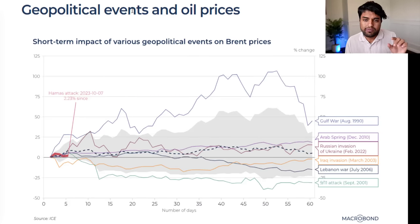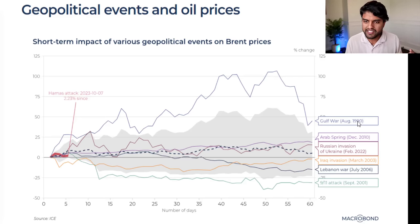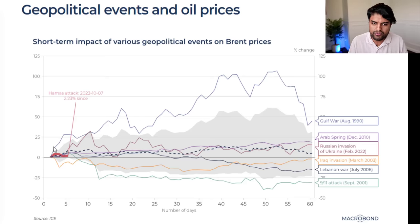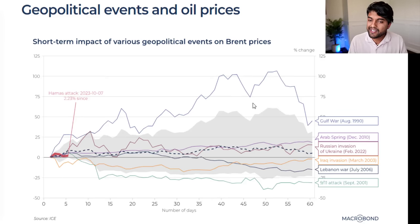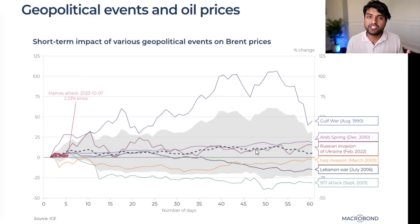Here's a chart showing how geopolitical events have affected oil prices when they happened and over time after the event. The Gulf War in 1990, where the US protected Kuwait from Iraqi dominance — oil prices shot up 25% in five days. The Arab Spring had some impact, then plateaued. The Russian invasion of Ukraine had an impact in the short term, but it's been up and down since, with a lot of Russian exports making their way through back channels through India, China, and other places to the West.